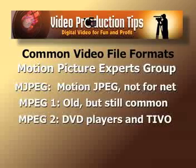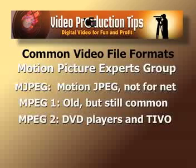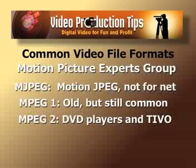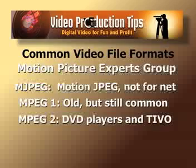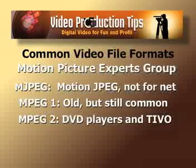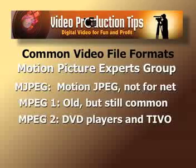MPEG-2 is the format that your DVD player or your TiVo machine uses. If you go down to Blockbuster Video and rent a Hollywood movie on a DVD, that's going to be an MPEG-2 format. Which means it's a very big format, and MPEG-2 is not suitable for the Internet because of its size, but it is very common.